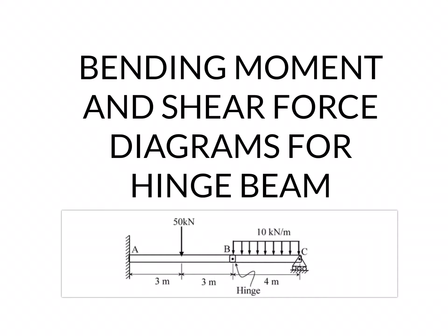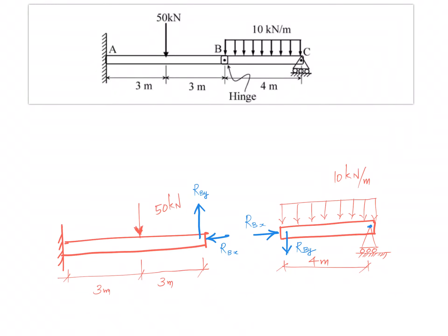The first step in this whole exercise is to draw the free body diagram. When you have a beam with one hinge in between, that can be split into two beams, and at the point where they are connected, the connection is replaced by two forces — one in the x direction and one in the y direction — but there is no moment transfer at this location, because it allows rotation.